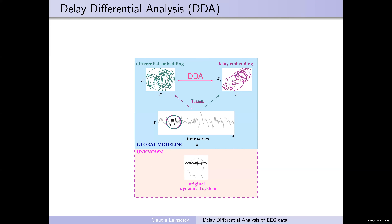You can also have a delay embedding, where you take the time series and a delayed version of the time series, and create also a phase space. These two patterns look very similar, and the idea of DDA is to combine them. This is a delayed differential equation where on the left side you have the derivative, and on the right side you have the delayed versions of the signal — x sub 1 is x of t minus tau 1. You have two delays in this equation, and the two delays are independent from each other.